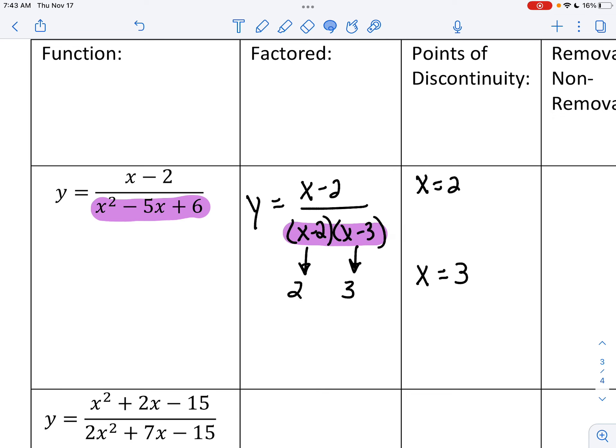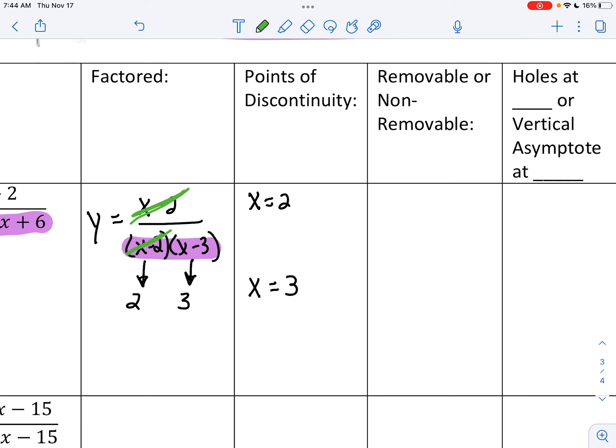Now, we're going to say if they're removable or not removable. To be removable means they would cancel out. So do you see two things that would cancel out? One in the numerator and one in the denominator? Yes. What are they? x minus 2 and x minus 2. Okay. So that means this one is removable. Now, the new part, because they did that up above, we're going to talk about if those are holes or if they are asymptotes. So the holes will happen at x equals that number, and the asymptotes will happen as a vertical line at that number.